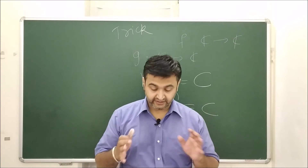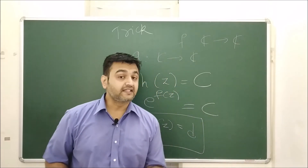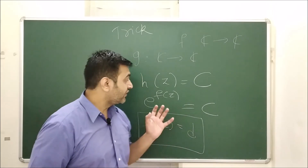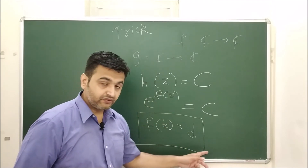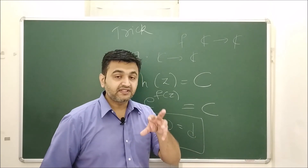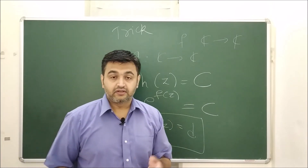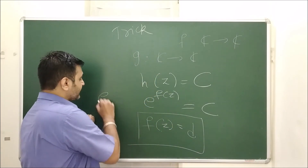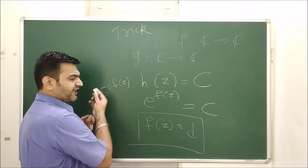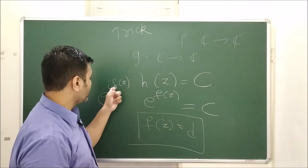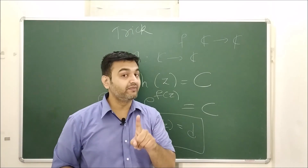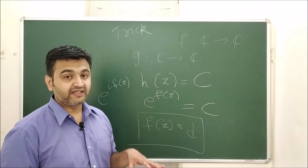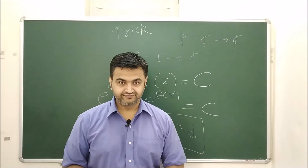Now, if the function is entire and the imaginary part is bounded instead, the answer is again yes — the function must be constant. For this case, we construct e^(if(z)) instead. If f(z) = u + iv, then e^(if(z)) = e^(i(u+iv)) = e^(iu - v) = e^(iu) · e^(-v). Since |e^(iu)| = 1, we are left with e^(-v) ≤ e^M, as v is bounded. So the same argument applies.